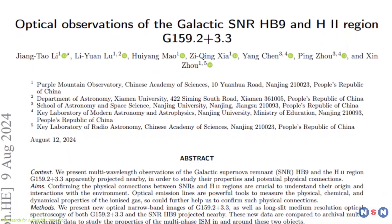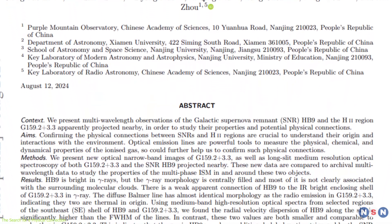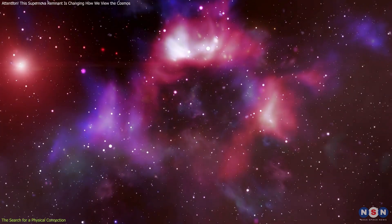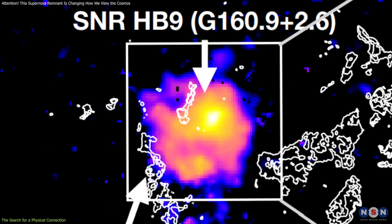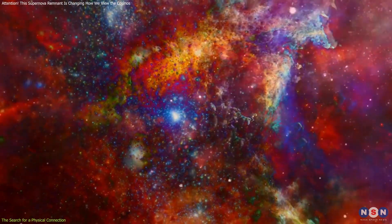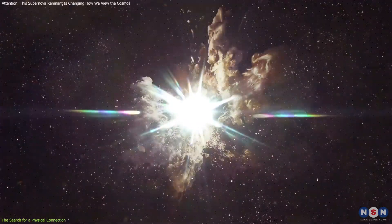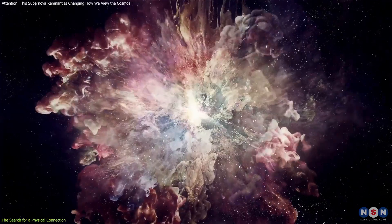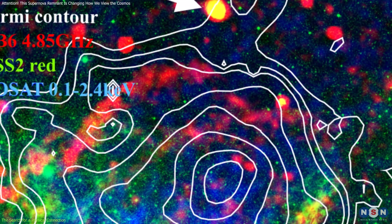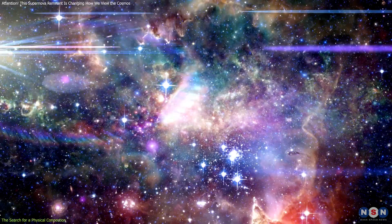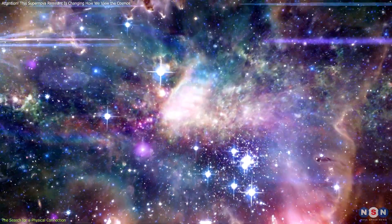Despite this conclusion, the study provides valuable insights into the behavior of supernova remnants and H2 regions. For example, the fact that Hb9 is bright in gamma rays suggests that it is still an active remnant, with shock waves from the original explosion continuing to influence the surrounding space. This means that even though Hb9 and G159 aren't interacting, Hb9 is still playing a role in shaping its environment.